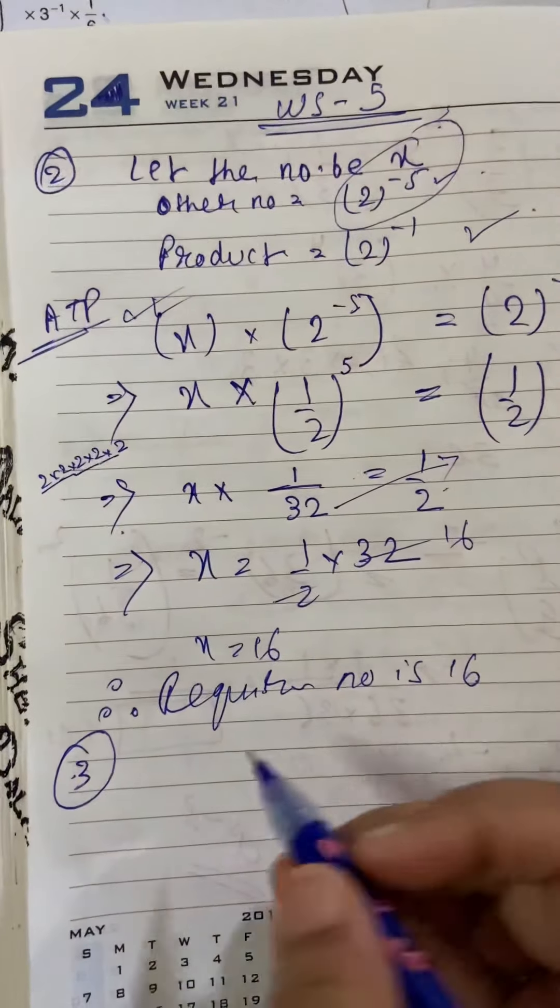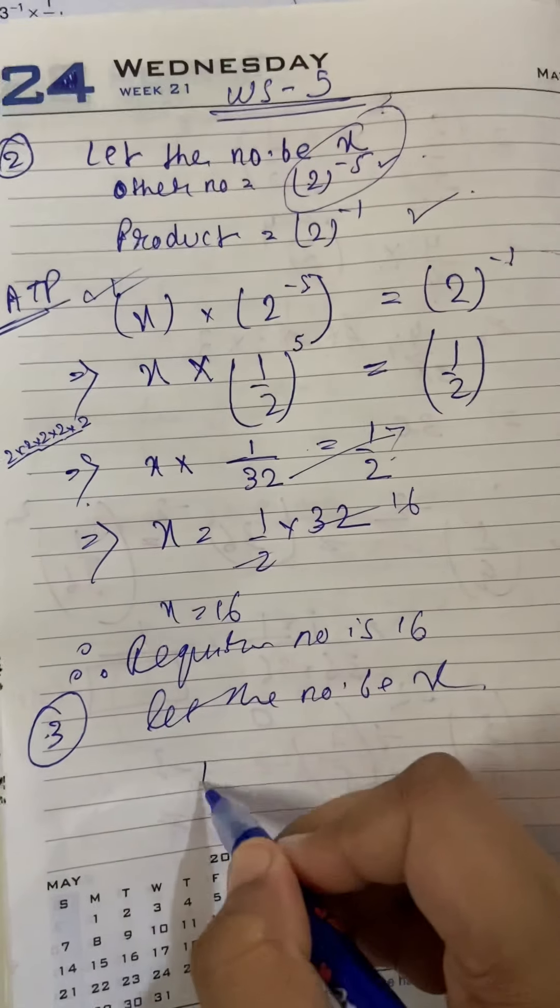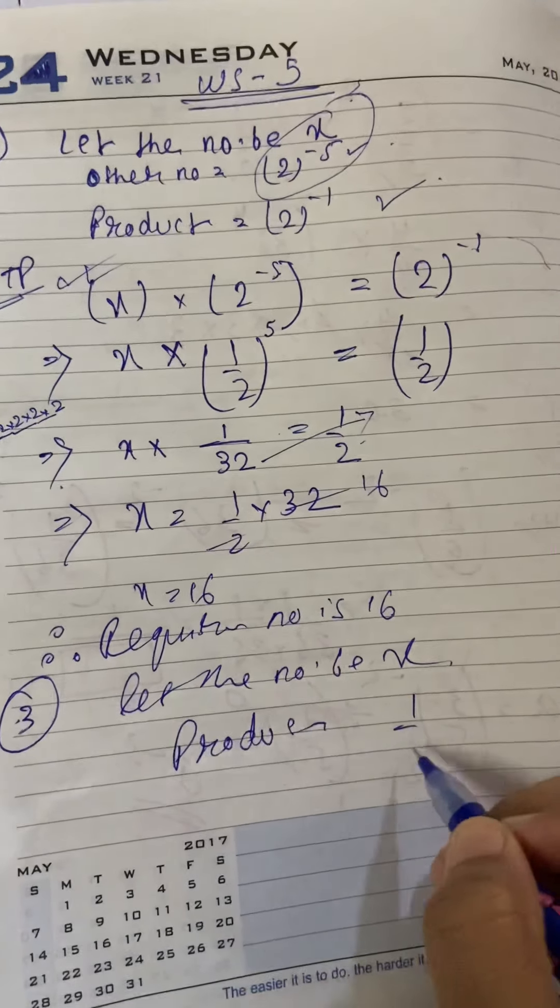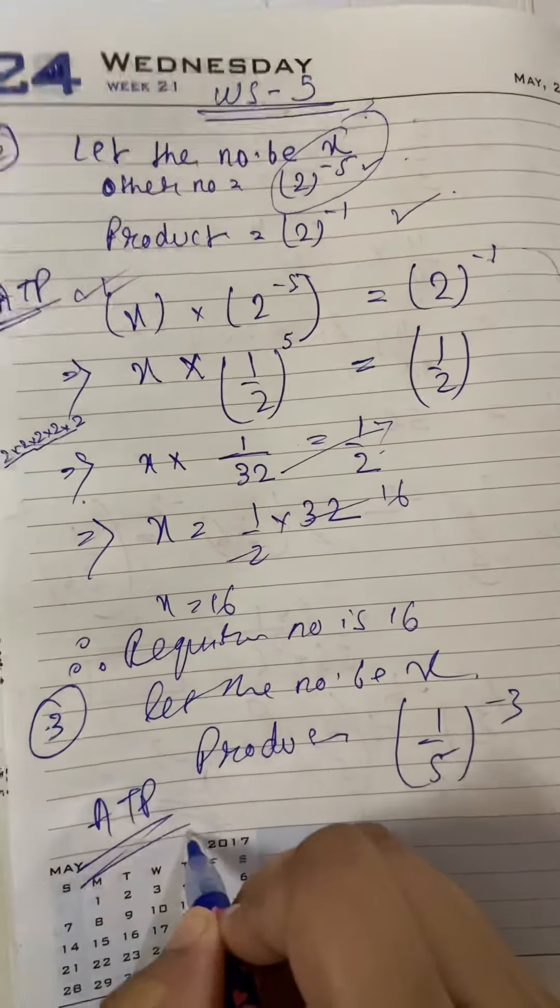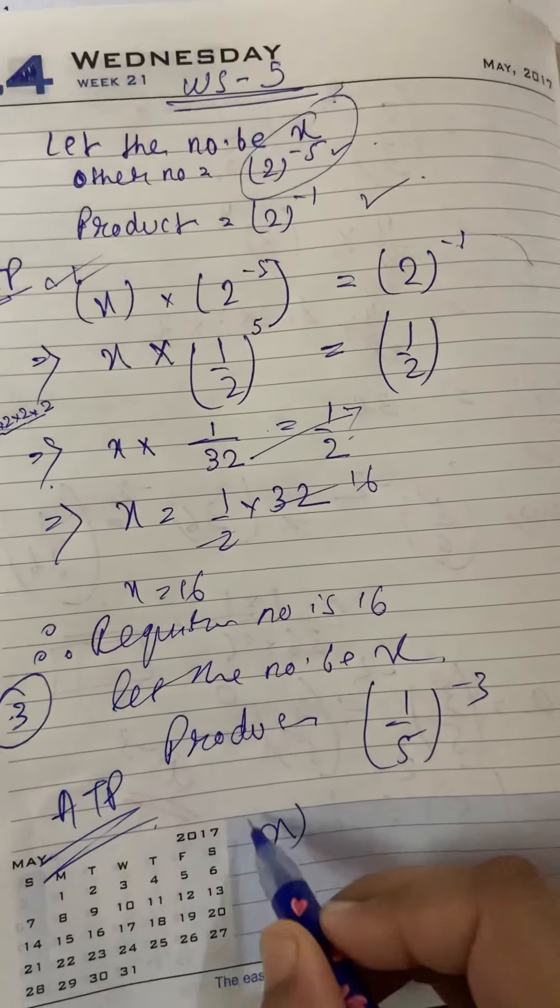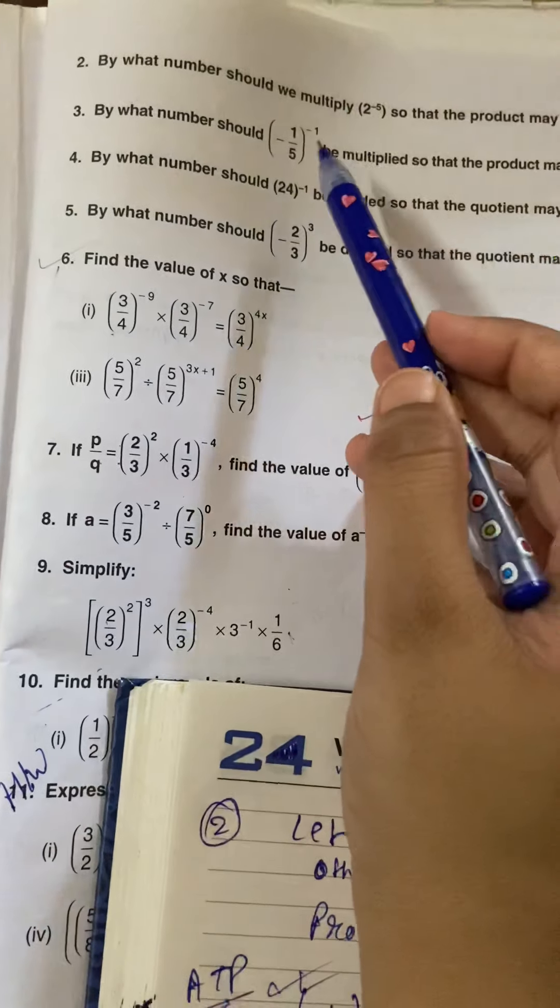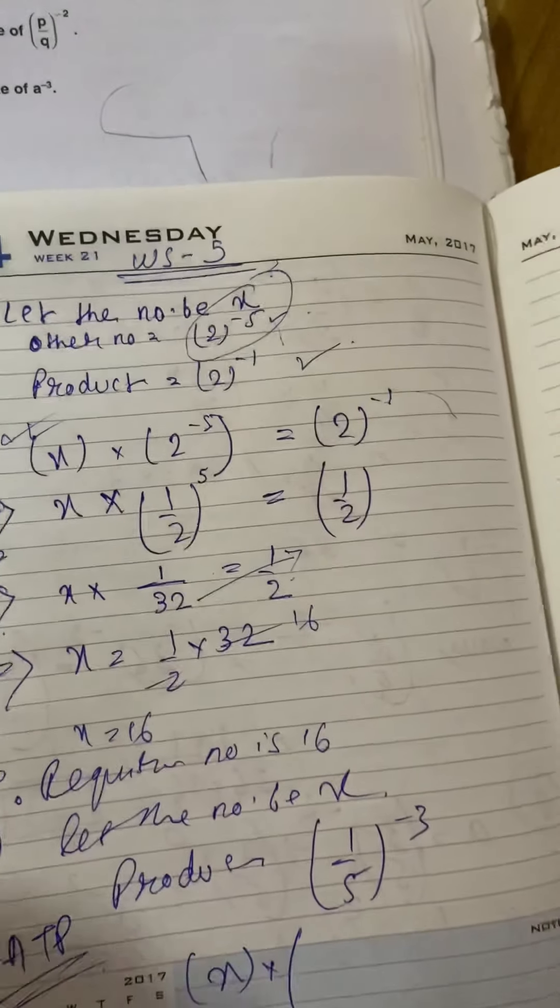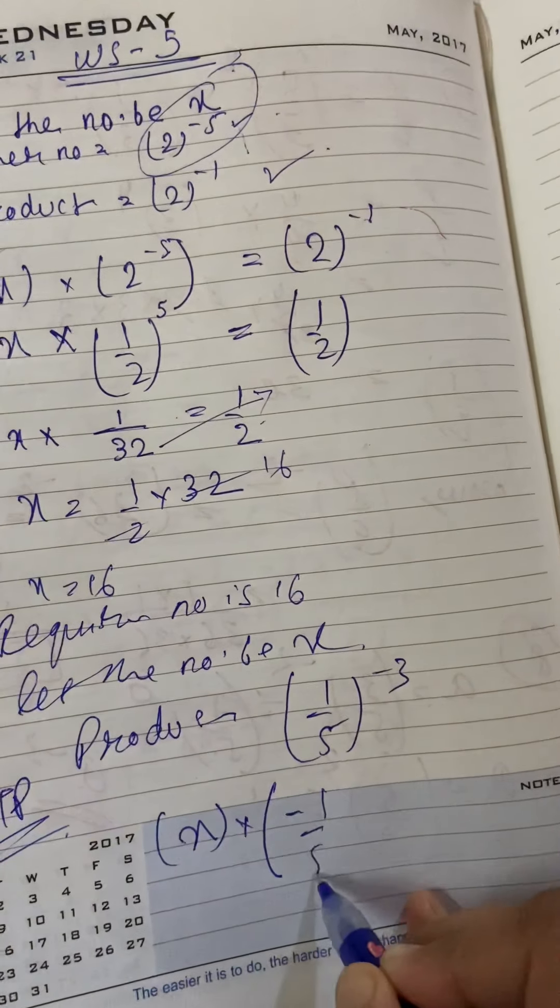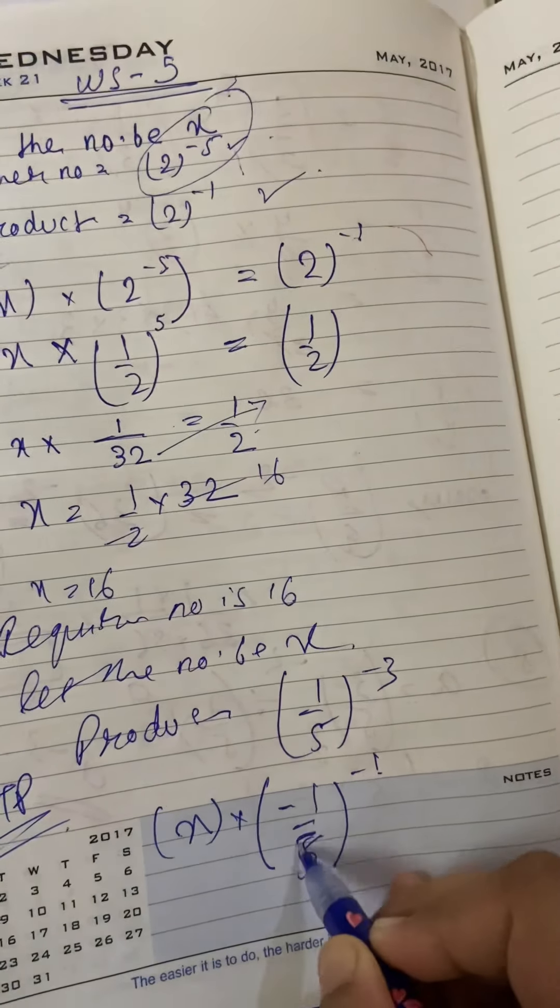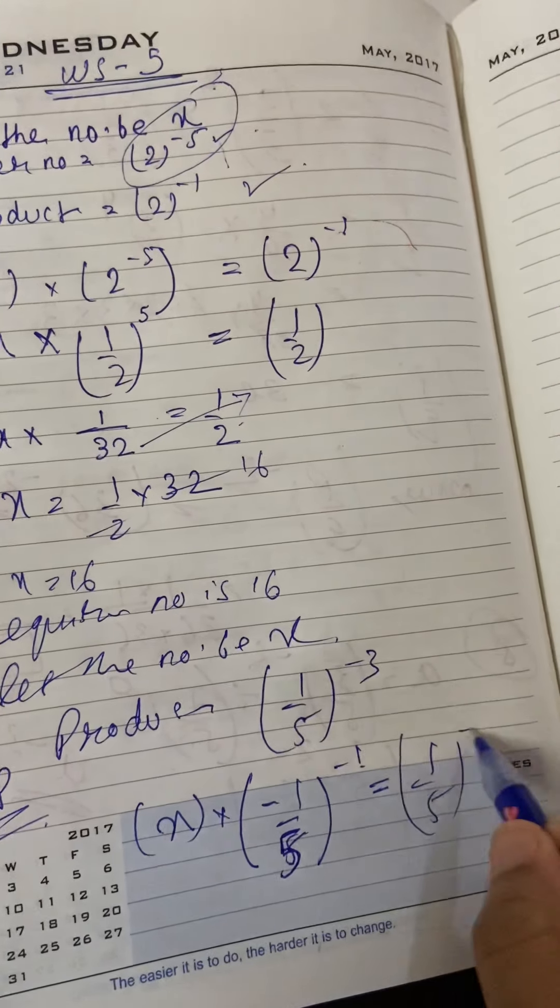By what number should this be multiplied? Let the number be x. Product kitna aayega last mein? So that the product may be equal to 1 by 5 to the power minus 3. To, according to problem kya hooga? X mein hum log multiply karenghe kis ko? By what number should this be multiplied? To, is number ko multiply karenghe. So, it will be minus 1 by 5 to the power minus 1. Equals to 1 by 5 to the power minus 3.